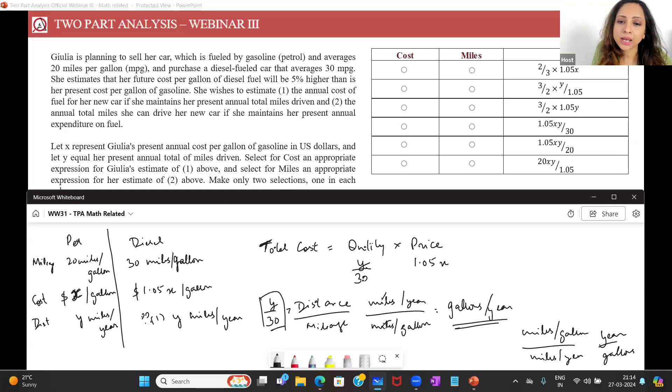So either focus on the units, figure out what the units are and ensure you get the right answer, or take a simple example. The quantity here is y by 30 and the price here is 1.05x. The product of these will give me the total cost. So my one should be 1.05xy by 30 and I have it over here. So cost will be 1.05xy by 30, this option.